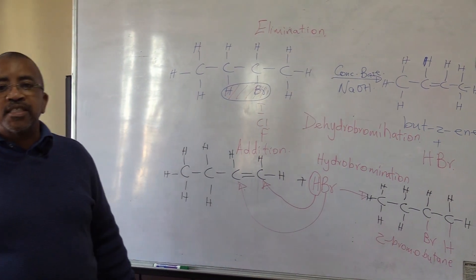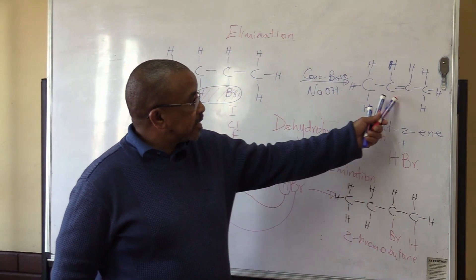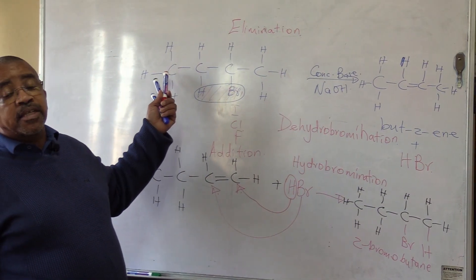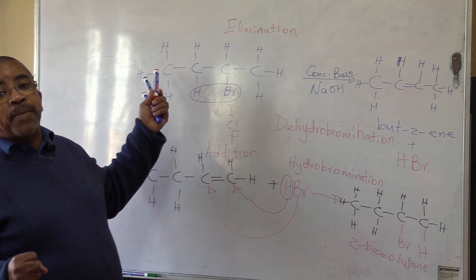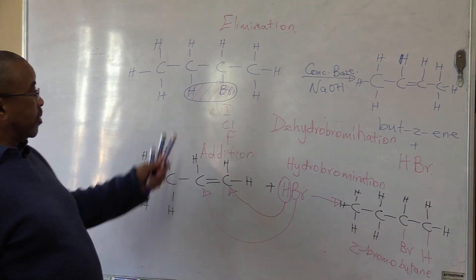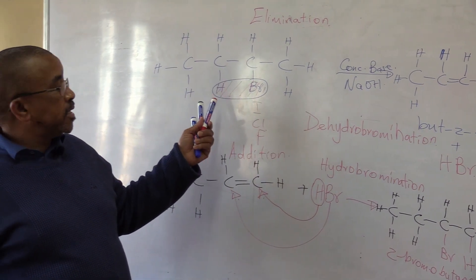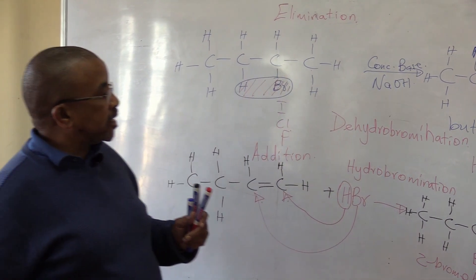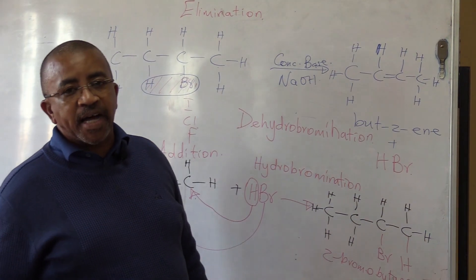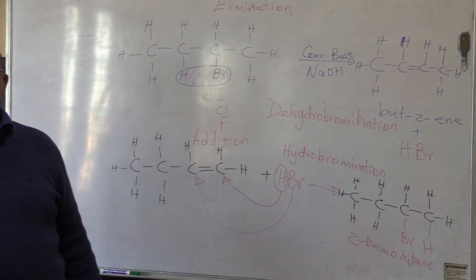In addition, the reactants are more than the products. But in elimination it is the other way around — the products are more than the reactants. For example, 2-bromobutane eliminates to give but-2-ene plus HPR, hydrogen bromide. So we have two products from one reactant.